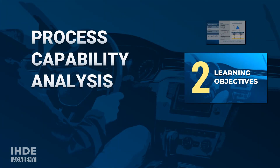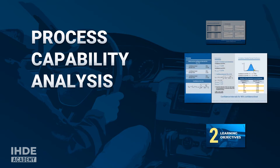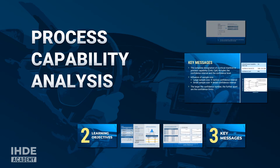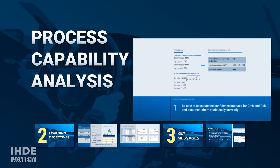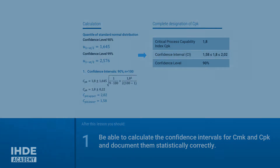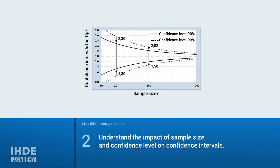In this lesson, we calculate the confidence limits for the index CPK for the critical process capability. We also talk about the confidence level and sample size. This lesson has two learning objectives: you should be able to calculate and correctly document the confidence intervals of the critical machine and process capability, and you should know the influence of the sample size and the confidence level on the size of the confidence intervals.